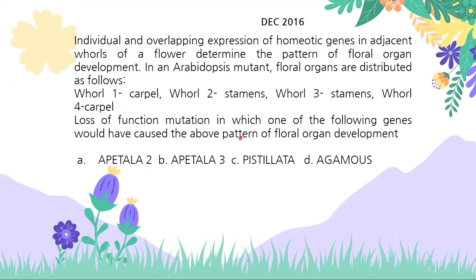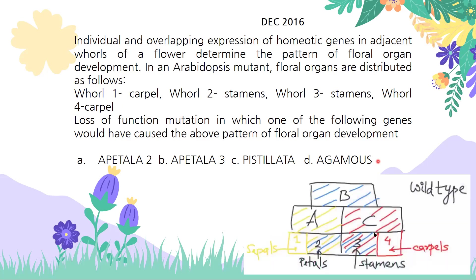We can quickly rule out some options. For whorl one and whorl four, only one gene is responsible each. The C class — which includes only Agamous — is responsible for carpel formation. Since we have carpels here, this is definitely not a mutant for class C genes, so Agamous is out of the question.